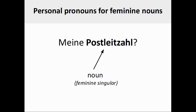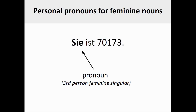The grammatical gender of the German noun Postleitzahl, or postal code, is feminine and the number of the noun is singular. If you were to see the definite article of the noun here, it would be die. Since Postleitzahl is a feminine singular noun, the matching personal pronoun to be used is sie — feminine, third person singular.